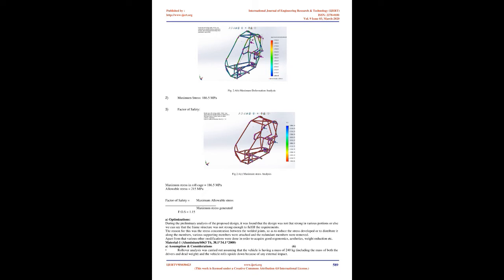Side Impact Analysis — Material 1: Aluminium 6063-T6, 38.1 × 34.1 × 2 mm. The side impact test was carried out assuming the vehicle has a mass of 240 kg including the mass of both drivers and dead weight, traveling at 40 km/h and colliding with another vehicle traveling at the same speed. All wheel mounting points are fixed with zero degrees of freedom. The load is applied on six nodes at one side of the frame. Mesh is beam mesh with fine density. As per NHTSA, minimum impact time is of the order of 250 ms.